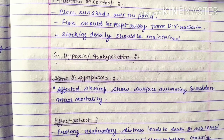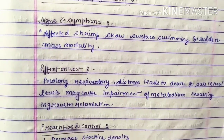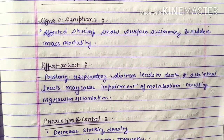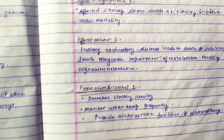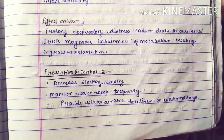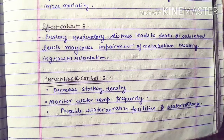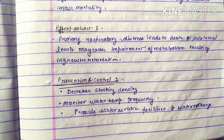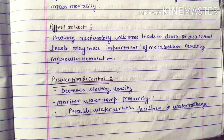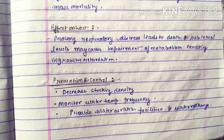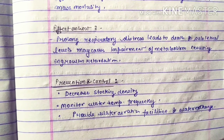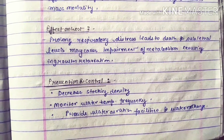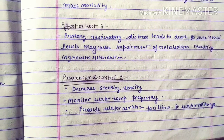Hypoxia or asphyxiation: signs and symptoms include affected shrimp showing surface swimming and sudden mass mortality. Effects on the host include prolonged respiratory distress leading to death, and sublethal levels may cause impairment of metabolism resulting in growth retardation. Prevention and control: decrease stocking density, monitor water temperature frequently, and provide water aeration facilities and water exchange.